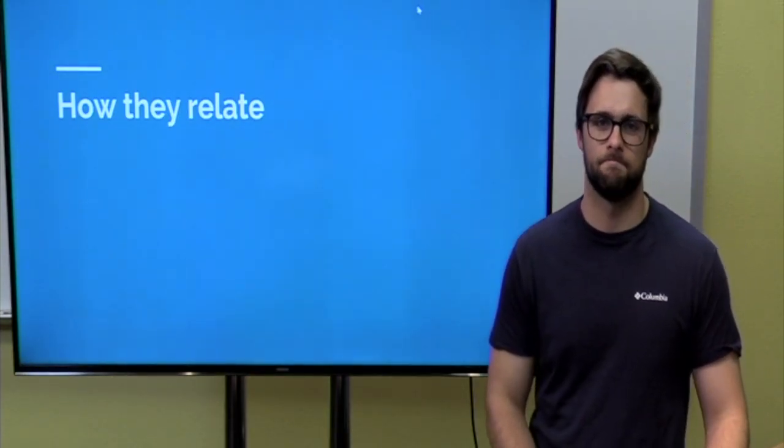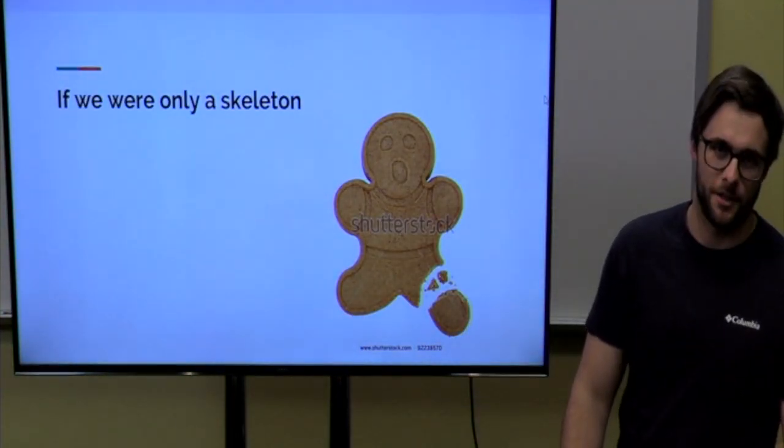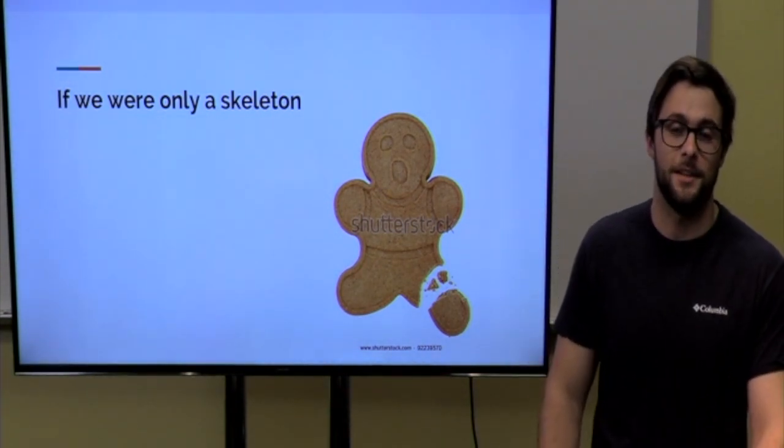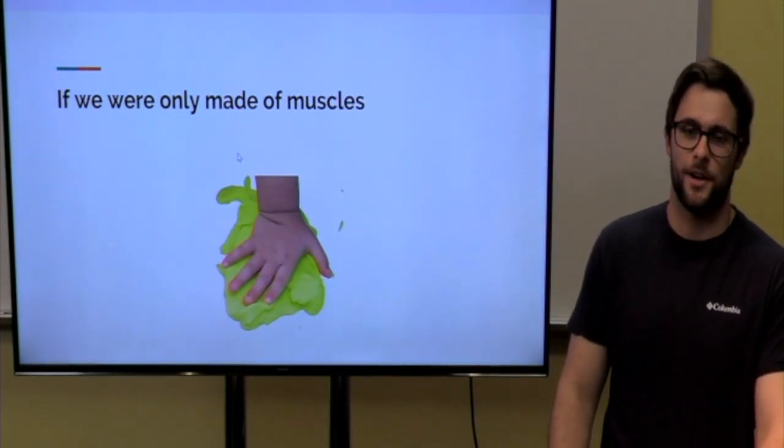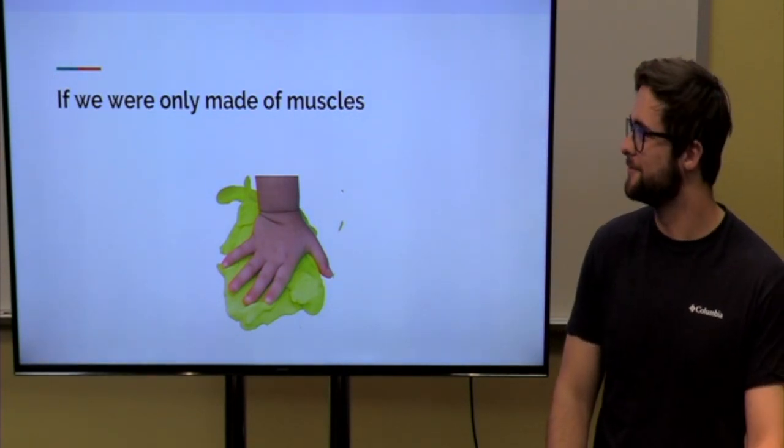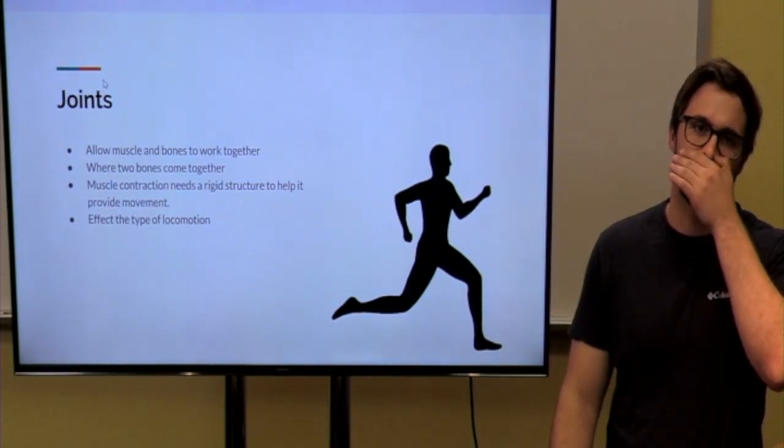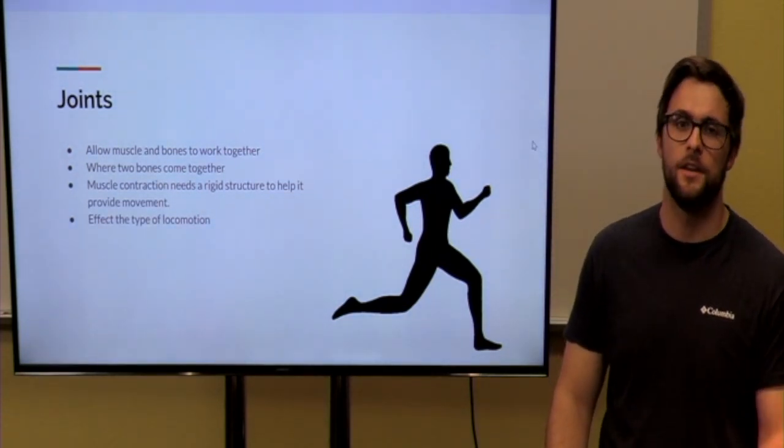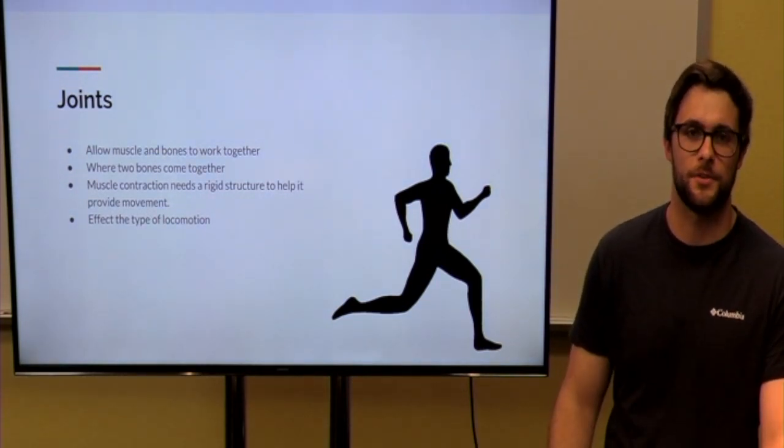Now, we will talk about how the two systems relate. If we were made of just a skeleton, we would be similar to a gingerbread cookie. It would be so rigid that we wouldn't be able to actually move or perform or do anything. On the other hand, if we were made of just muscles, we would just be a contracting block of muscles with no support, and we couldn't move. Where these two systems come together is joints. Joints allow the muscles and the bones to work together to provide movement. Muscles need a rigid place to act as an anchor for the muscle for when they contract.